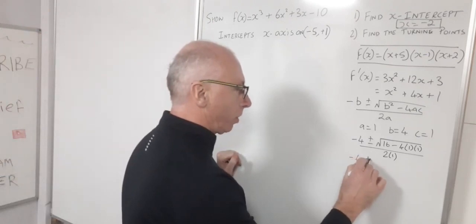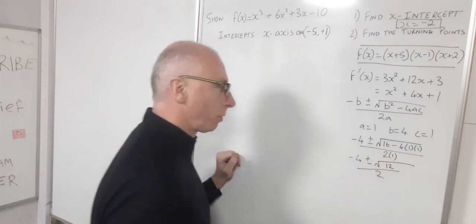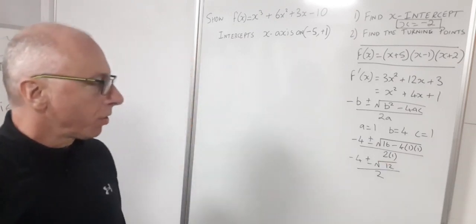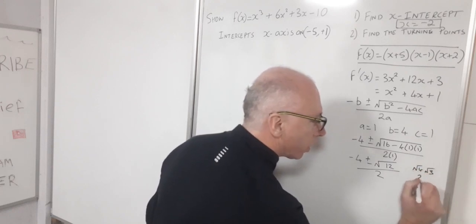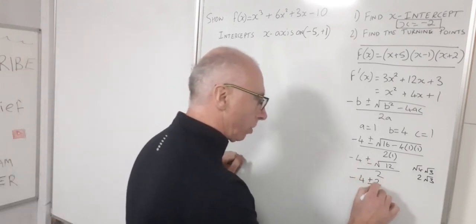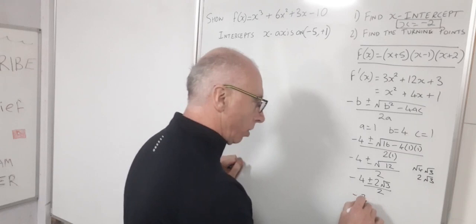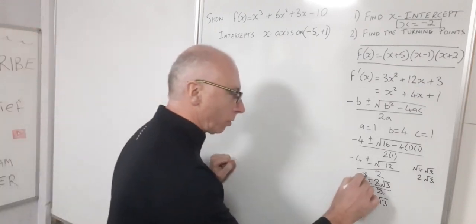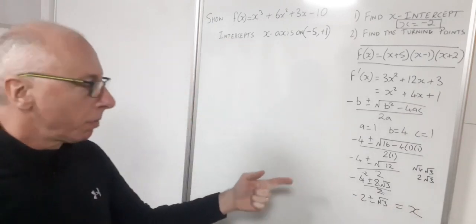So we have minus 4 plus or minus square root of b squared — that's 16 — minus 4 times a times c, all over 2 times a, which is 2 times 1. So we've got minus 4 plus or minus square root of 16 minus 4, that's 12, divided by 2. The square root of 12: 4 times 3 is 12, so square root of 4 times square root of 3, which is 2 root 3. So we get minus 4 plus or minus 2 root 3, all over 2, which simplifies to minus 2 plus or minus root 3. These are my x-values for my turning points.